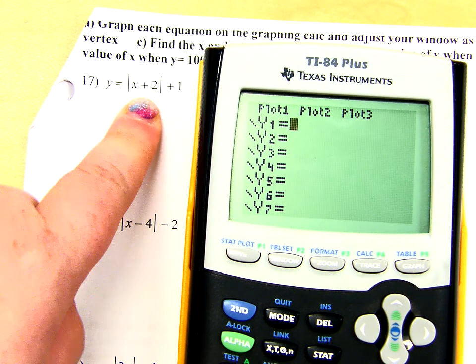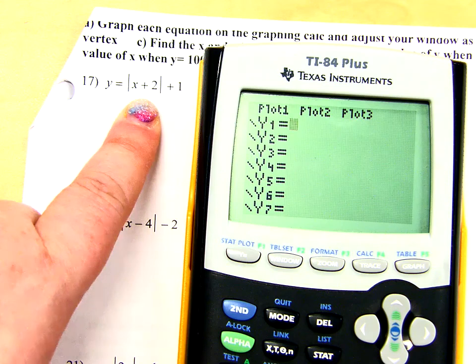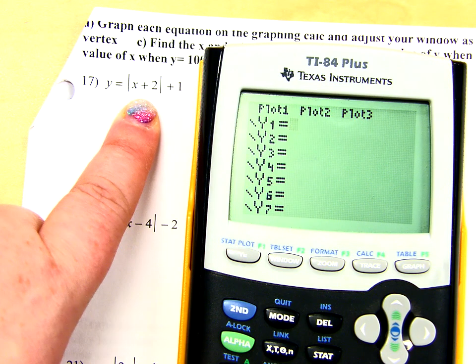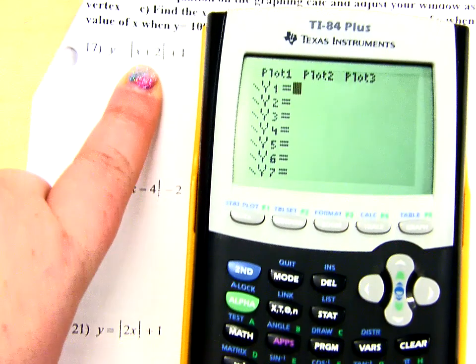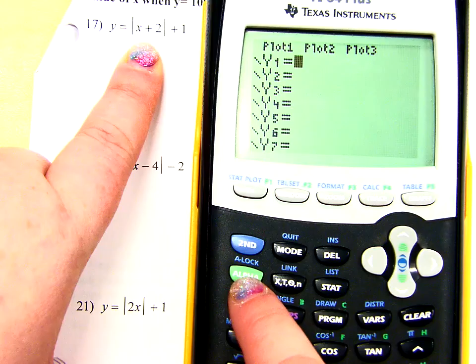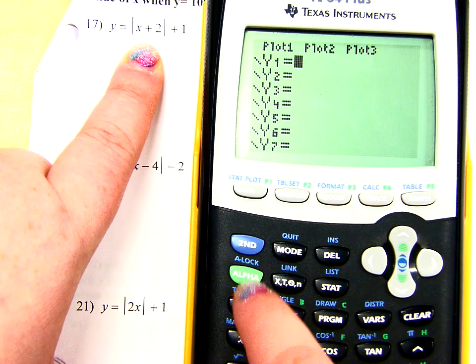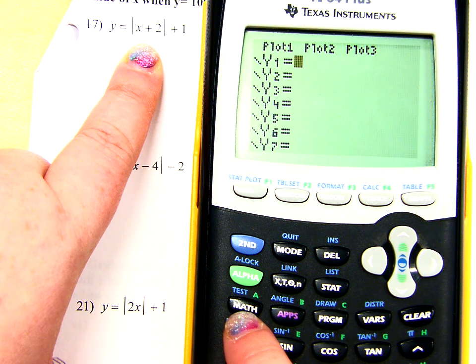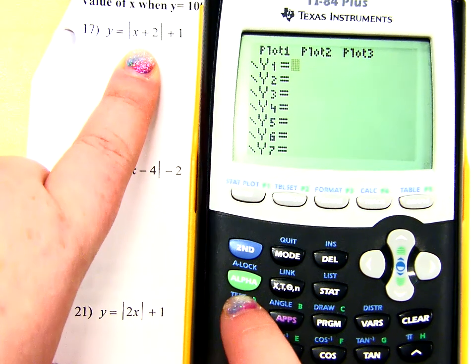And now I want the absolute value of X plus 2. In order to ask the calculator to do absolute value, we need to push the following button. Underneath your alpha key, which is green, there's a button that says math on it. You want to hit that math button.